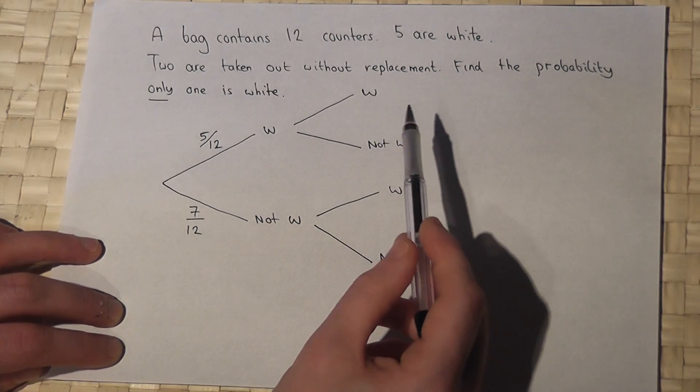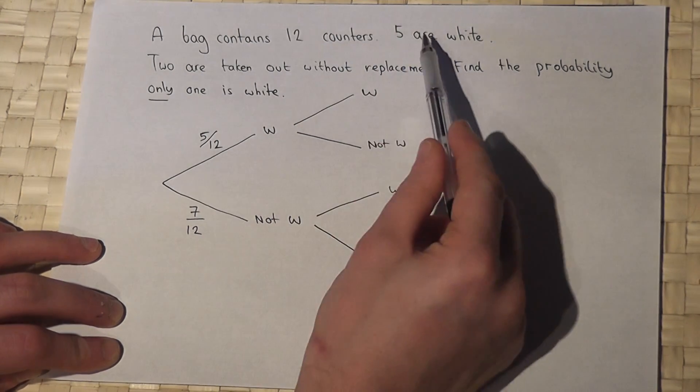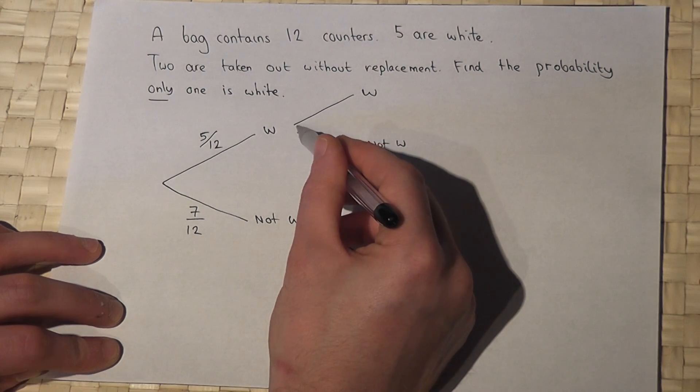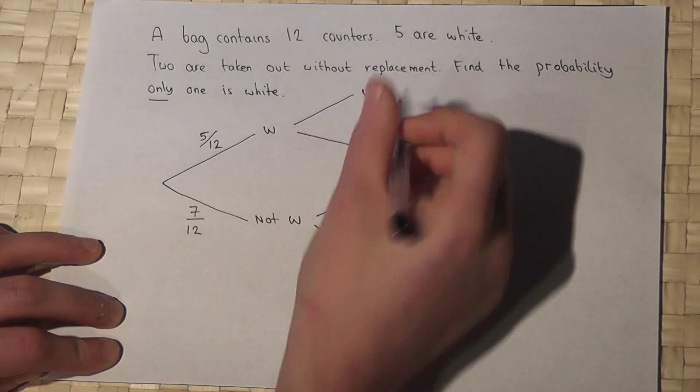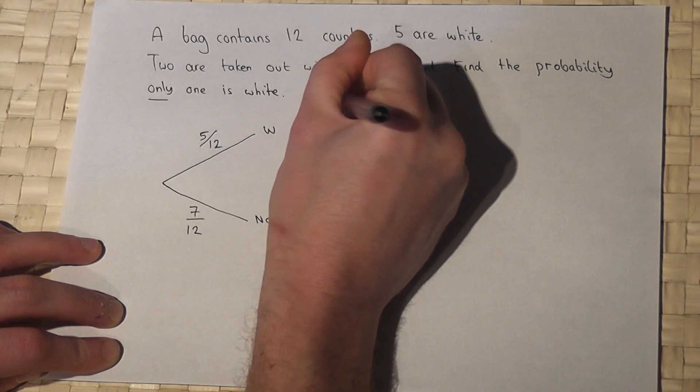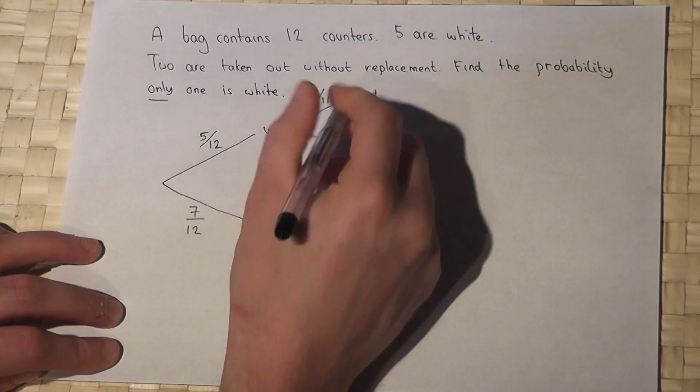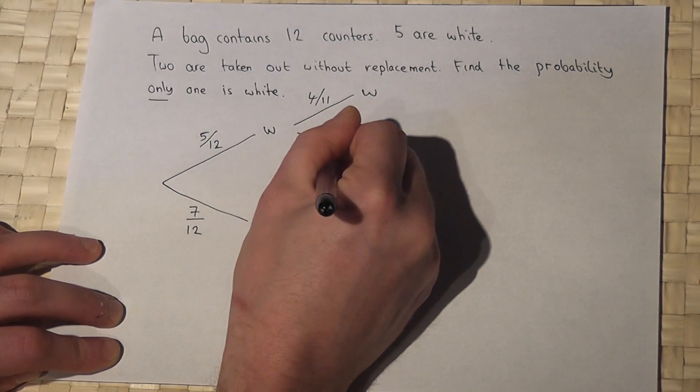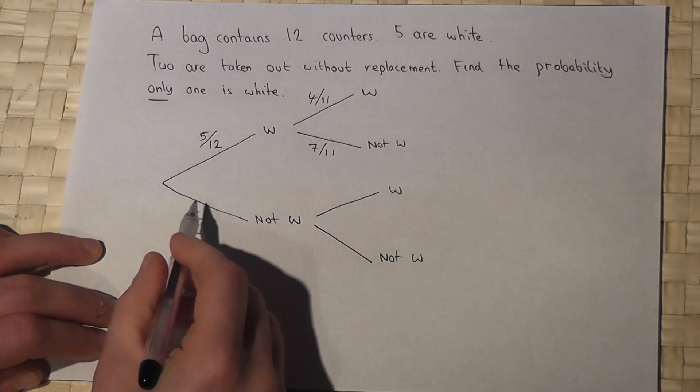...there's only 11 counters left, but now only four are white. So for the second counter, the chance of white is now 4 out of 11, not white will be 7 out of 11.